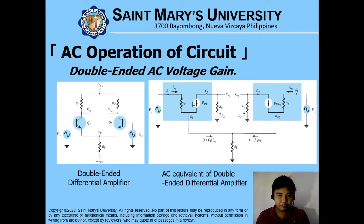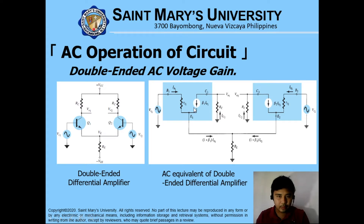Again, we have changed IC now into beta times IB, or our dependent current source. With this, we have grounded the positive VCC supply — grounded that one, which you can see here. We have now arrived at the AC equivalent circuit for our double-ended differential amplifier.